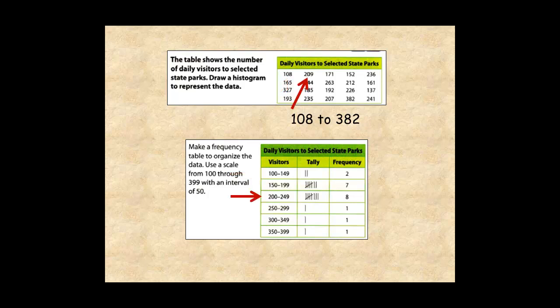The next number is 171, so add a tally mark to the 150 to 200 unit interval. Continue this way until the frequency table is complete.